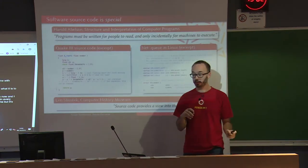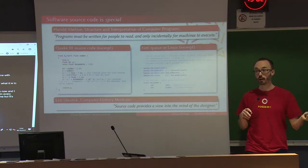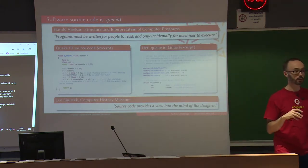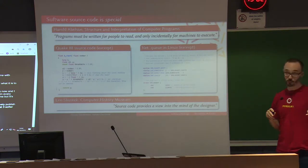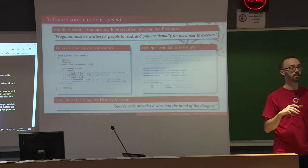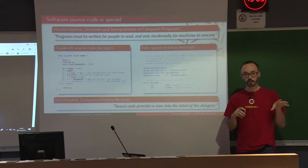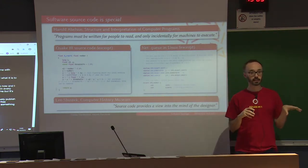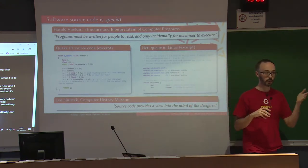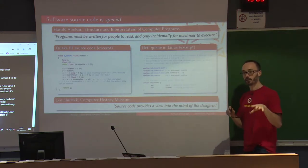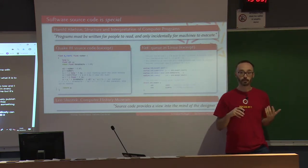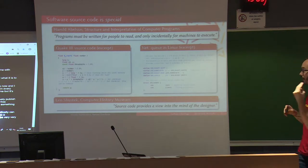We usually think about free software as something that is quite functional — software is made to make a computer do something for you, like play a game, drive some machines. But what I want to highlight today is that in free software, and specifically in source code — which is what free software allows you to see, modify, share — there is also a knowledge part. In every bit of source code you can read, there is information which might be very important and very novel.